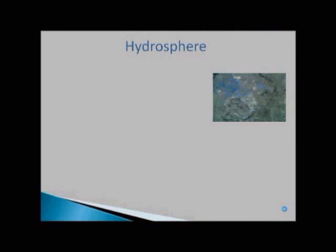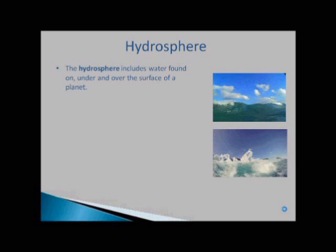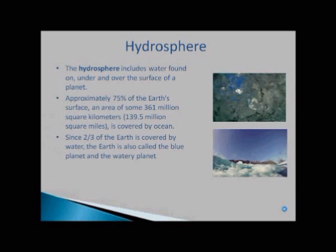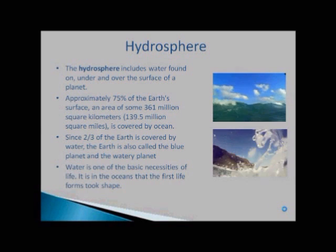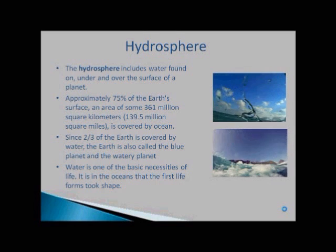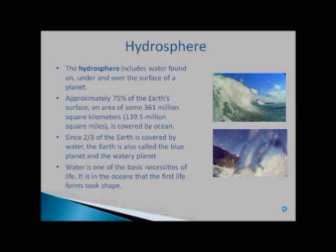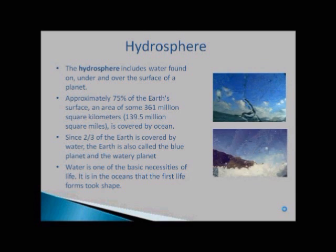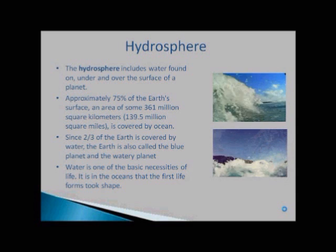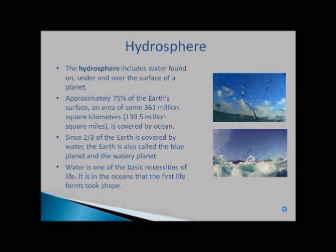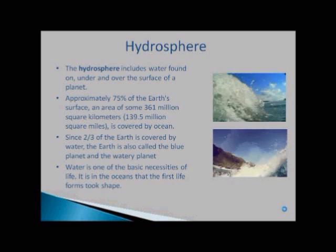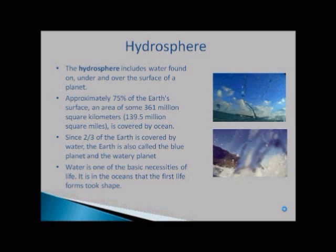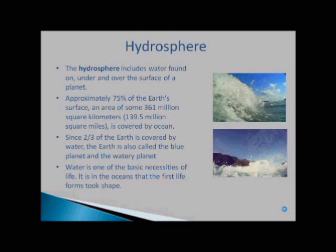Second segment of environment is Hydrosphere. The hydrosphere includes water found underground and over the surface of planet. Approximately 139.5 million square miles is covered by oceans. Since two-thirds of the Earth is covered by water, that's why the Earth is also called the blue planet and the watery planet.